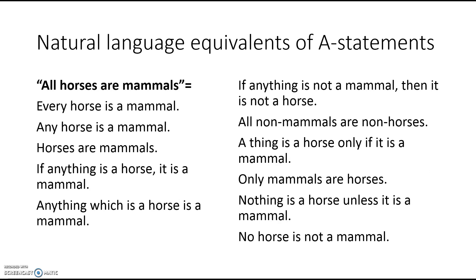Now all these statements, A type, O type, E type, I type, they have a lot of different natural language equivalents. So if I say all horses are mammals, there's a bunch of different ways I could say that. I might just say horses are mammals. That is an A statement. Or I might say, if anything is a horse, then it's a mammal. Now there's a bunch of different equivalents. I'm not going to go through them all, but you need to look through these so that you understand conceptually why these are all saying exactly the same thing.